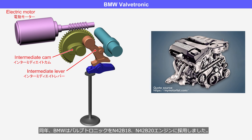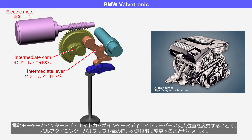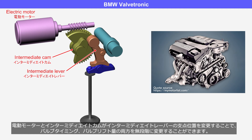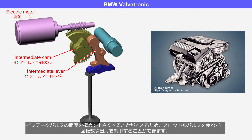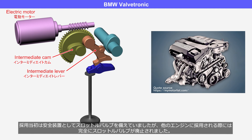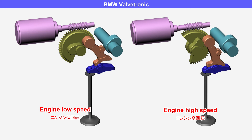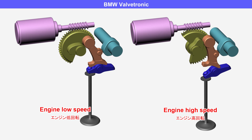In the same year, BMW adopted Valvetronic for N42B18 and N42B20 engines. By changing the pivot position of the intermediate lever through the electric motor and intermediate cam, it is possible to continuously adjust both the valve timing and valve lift amount. Due to the ability to greatly reduce the opening of the intake valve, it is possible to control the engine speed and output without using a throttle valve. Initially a throttle valve was equipped as a safety device, but when Valvetronic was introduced in other engines, the throttle valve was completely eliminated. You can observe that the valve opening and closing timings, as well as the valve lift amounts, are different between high and low engine speeds.